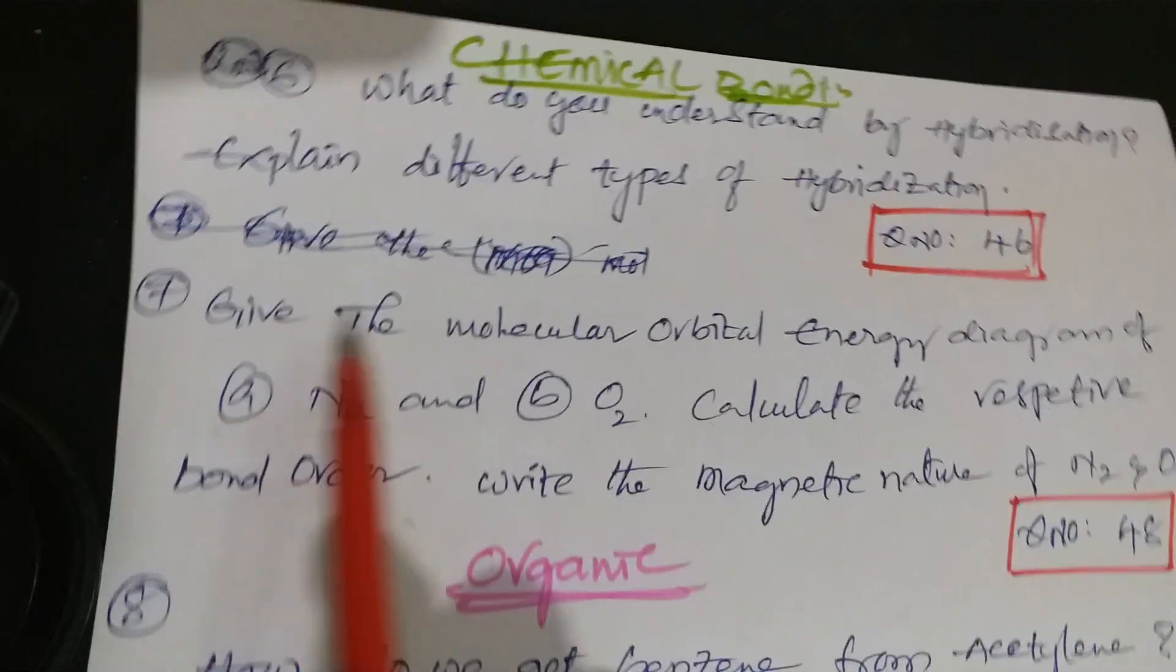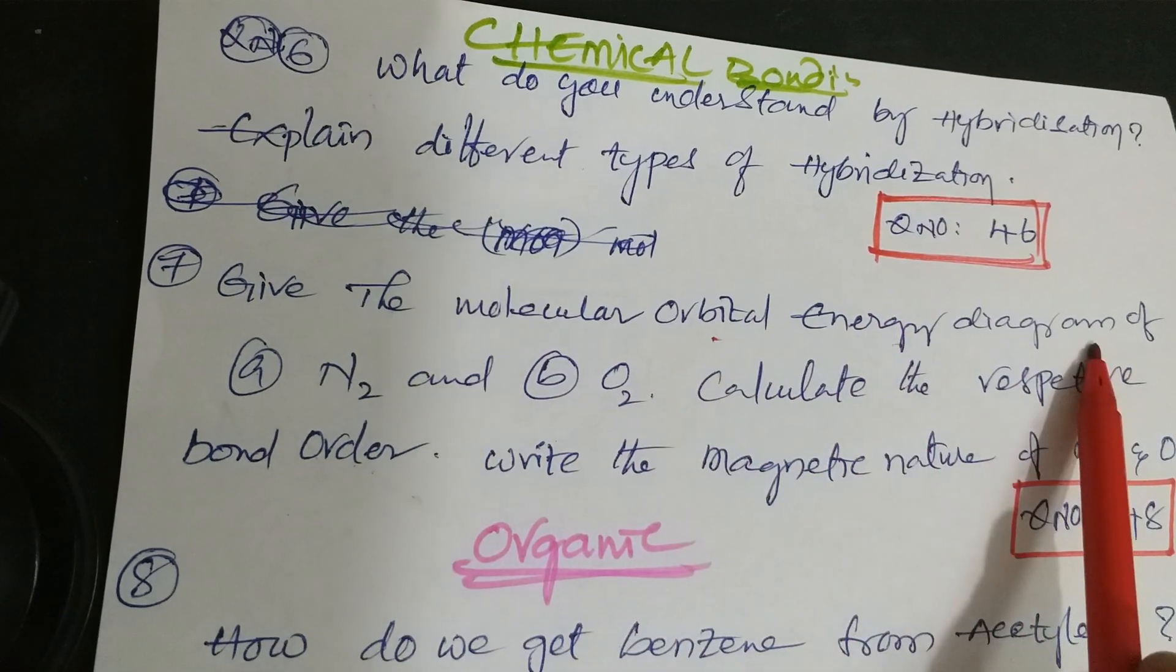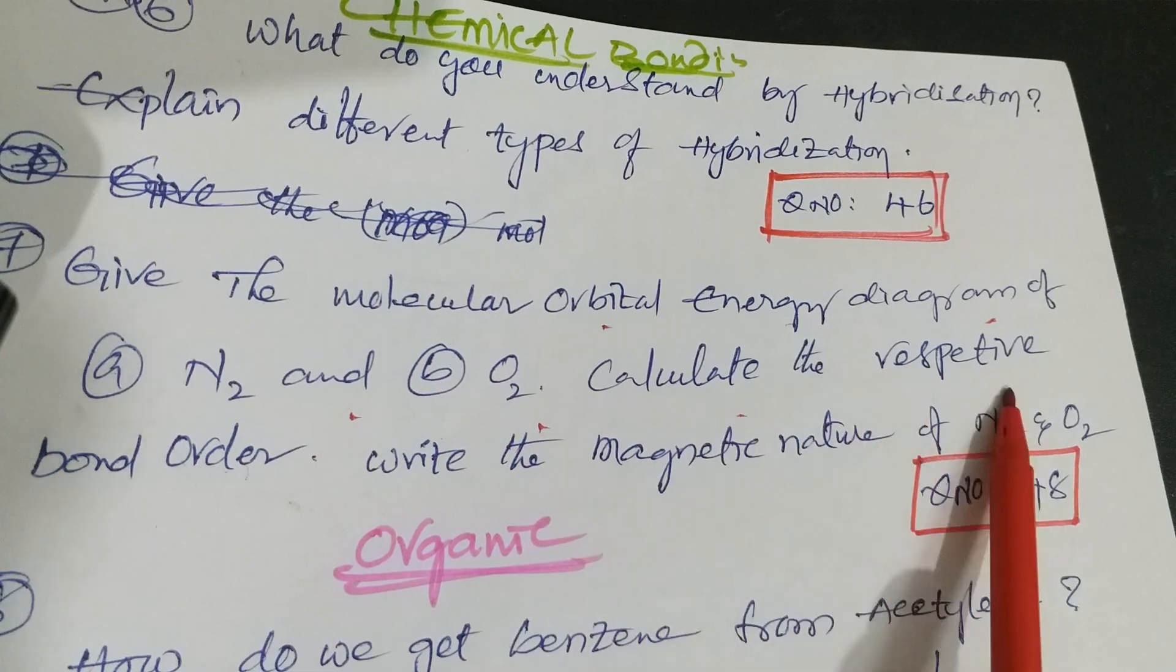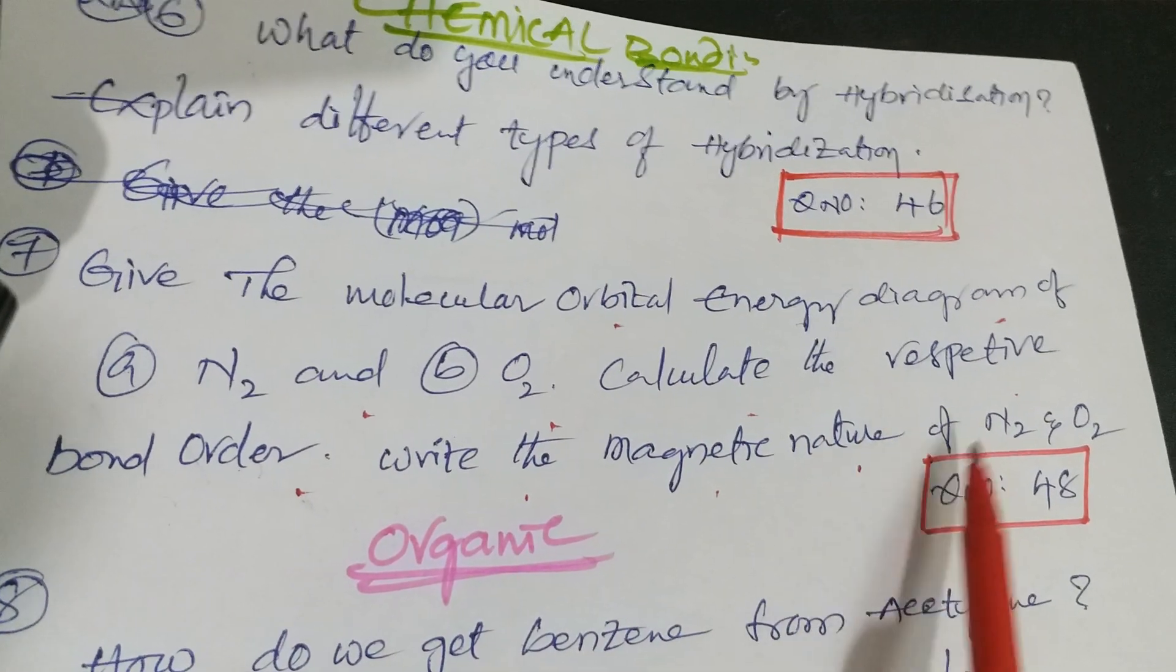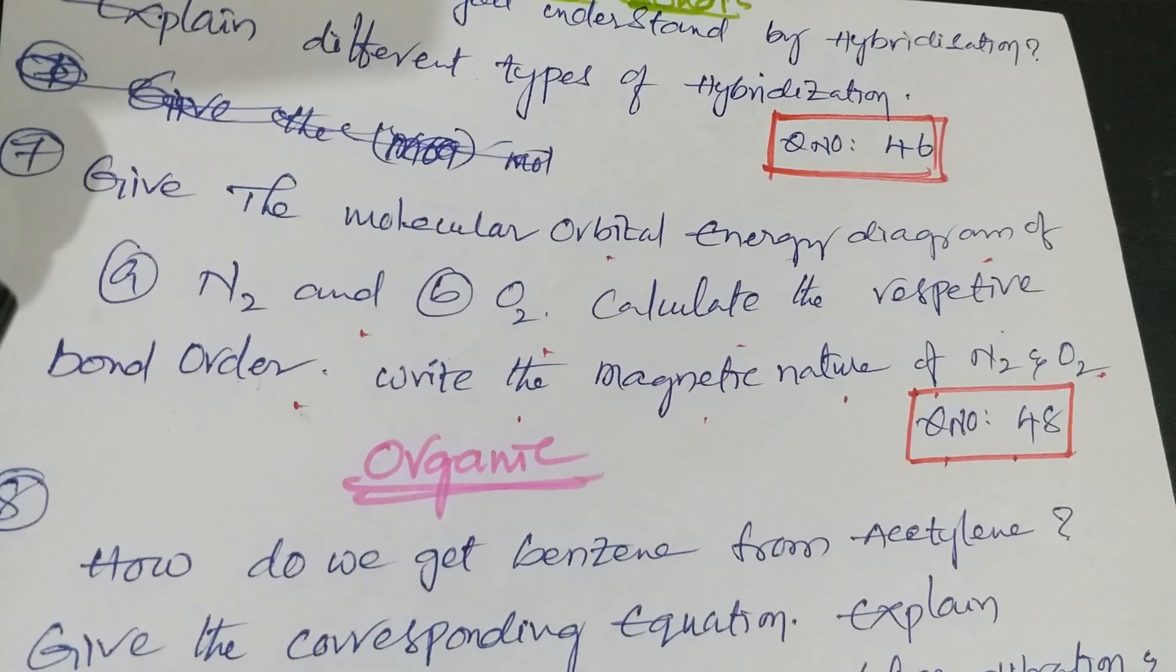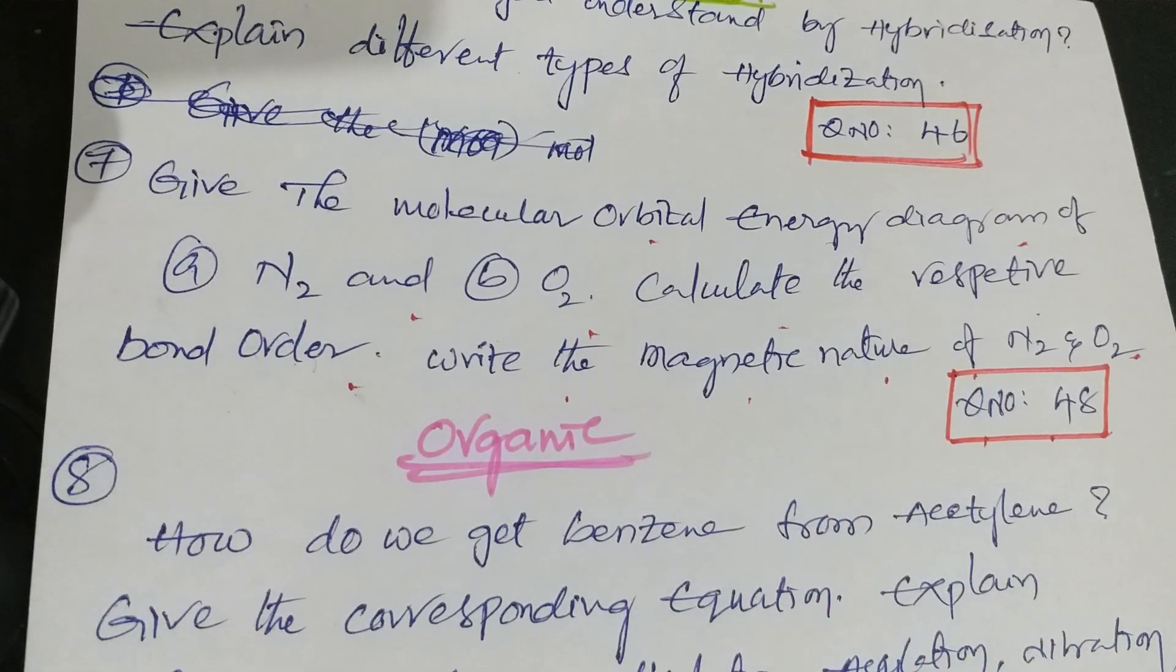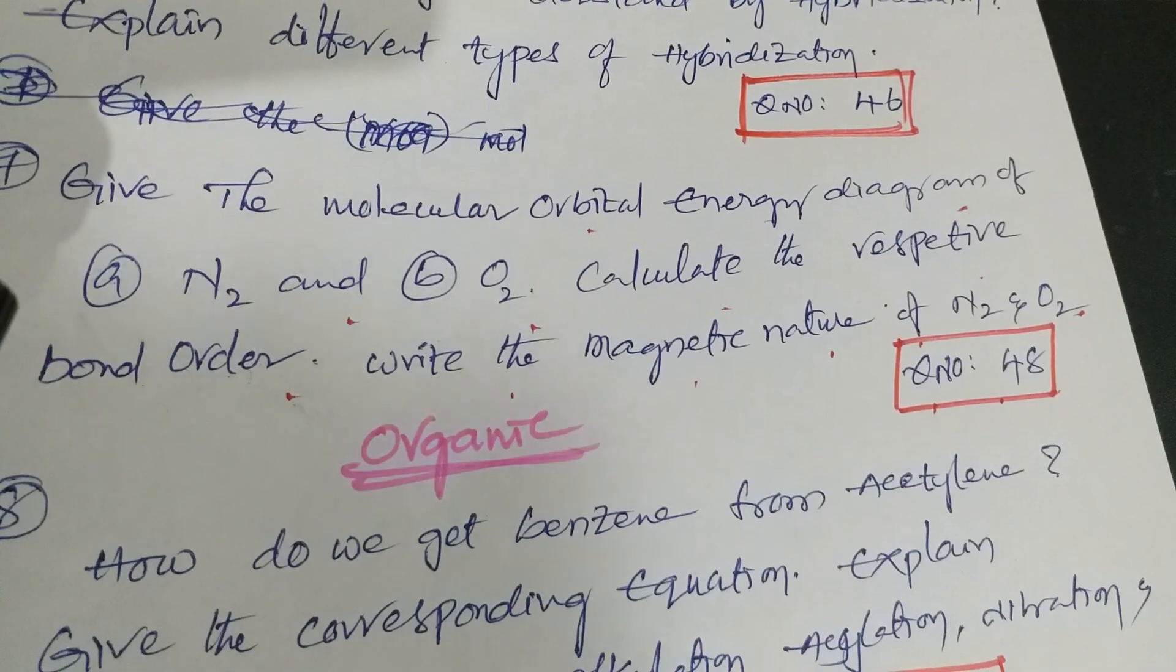Next question: Give the molecular orbital energy diagram of N2 and O2. Calculate the respective bond order and write the magnetic nature of N2 and O2. That is question number 48 from Telangana Academy textbook. These two questions are important from chemical bonding lesson.